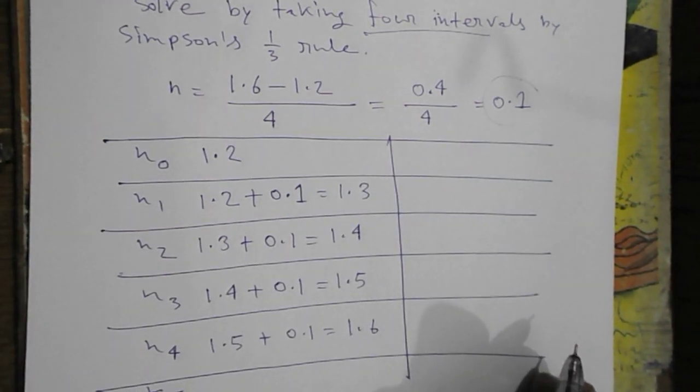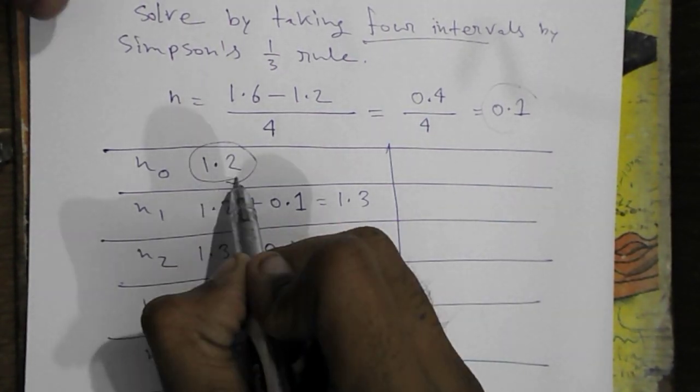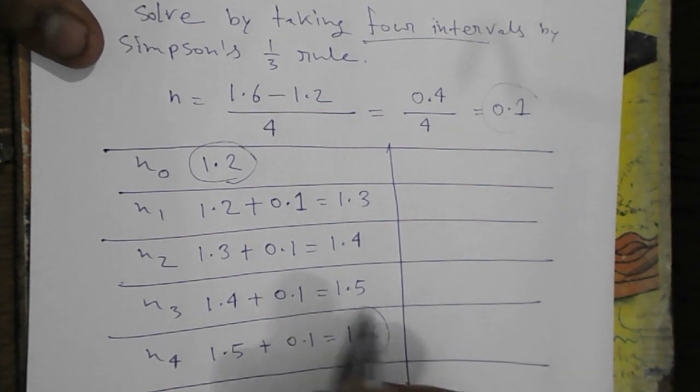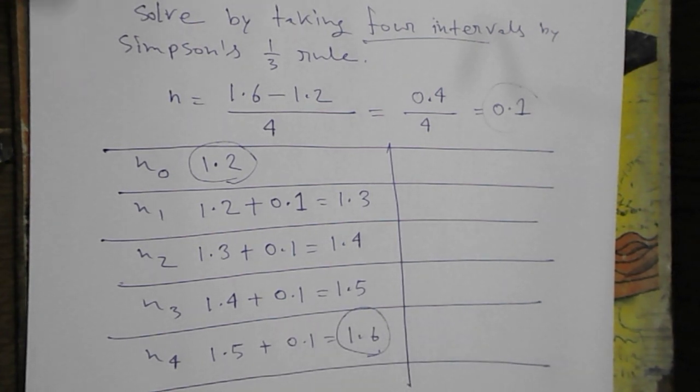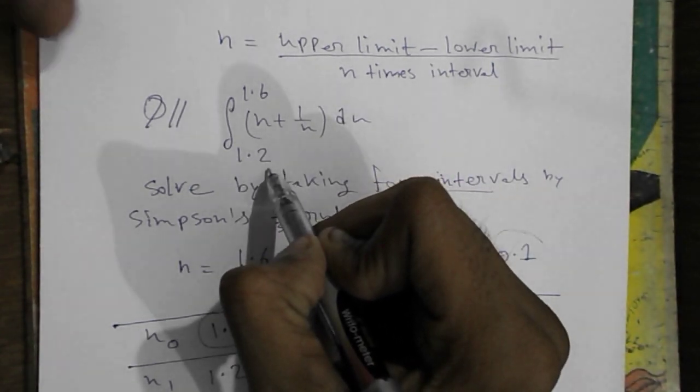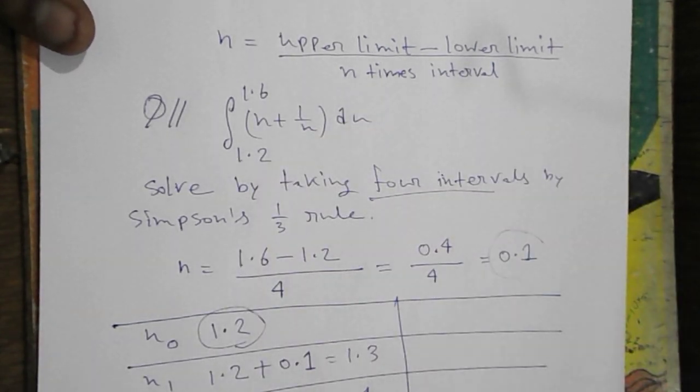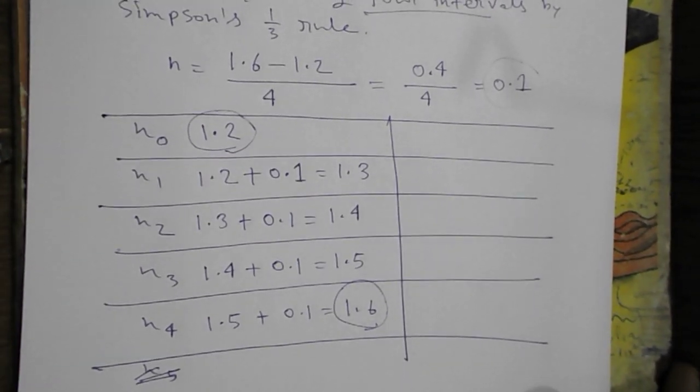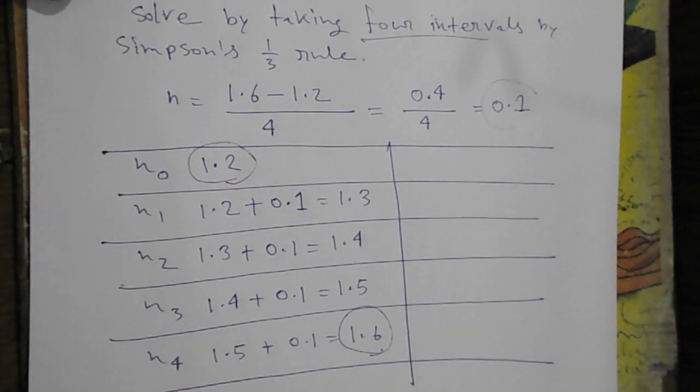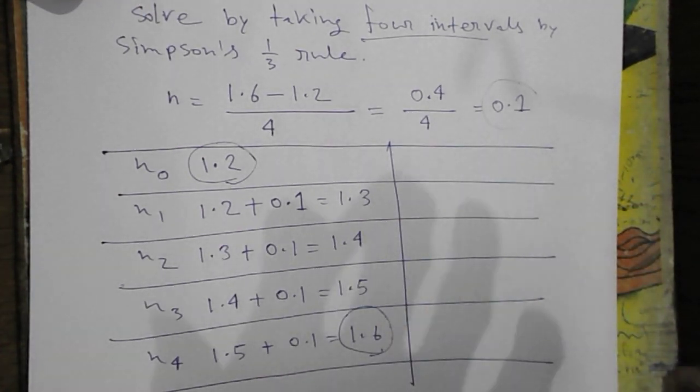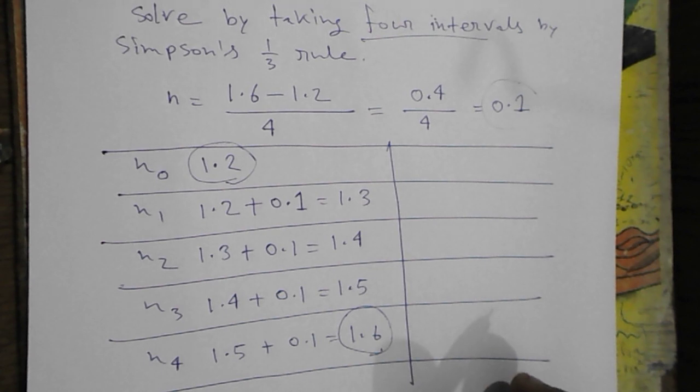So our lower limit is 1.2 we have seen. And our upper limit is 1.6 as given in the math. Lower limit is 1.2 to 1.6. And now we have to calculate.